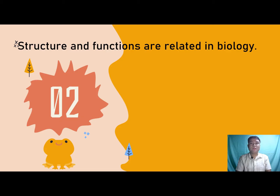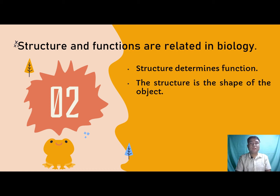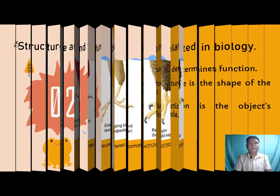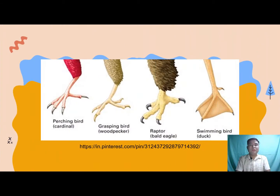The second unifying theme is that structure and functions are related in biology. Structure determines function. The structure is the shape of the object, and the function is the object's specific role. The function of an organism or a part of an organism greatly depends on its form and structure. An example is the webbed foot of a duck, which helps ducks swim and search for food underwater. Other birds have different structures of feet used for perching and grasping food.